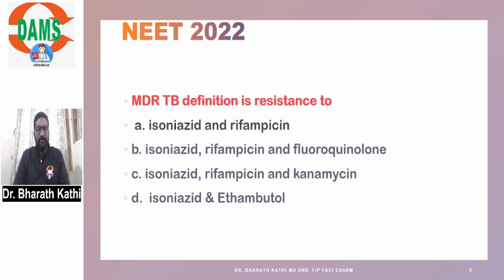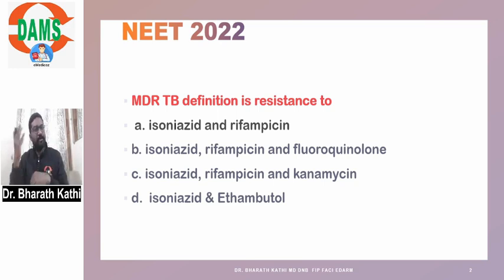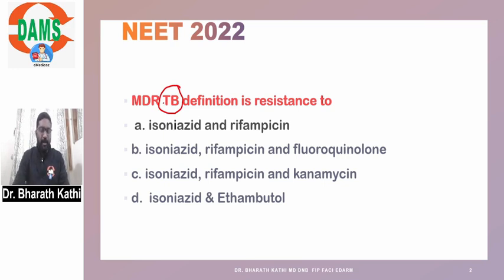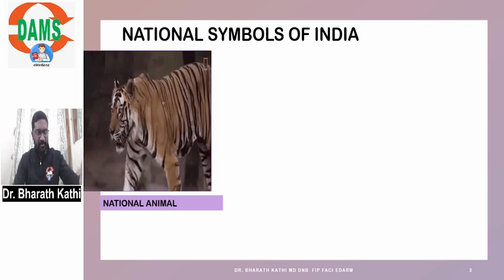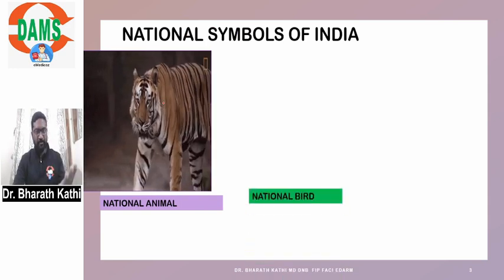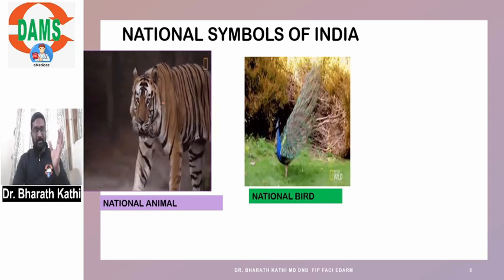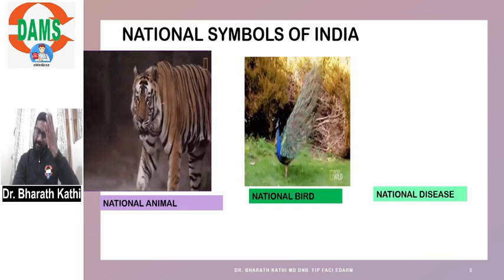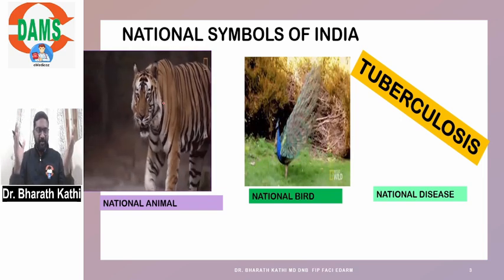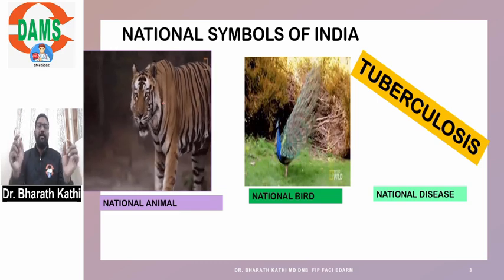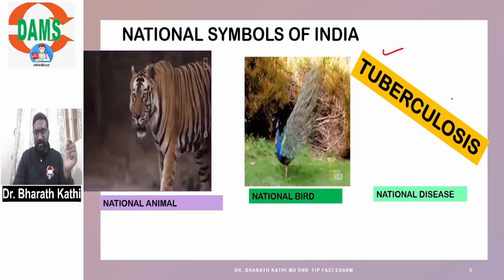The question is: MDR-TB definition is resistance to — this was asked very recently in NEET 2022. We have so many infections, from HIV to recent COVID, but don't ever forget tuberculosis. As long as you are in India and writing exams concerned with India, each and every exam will have a question regarding tuberculosis.